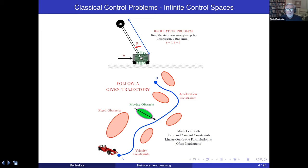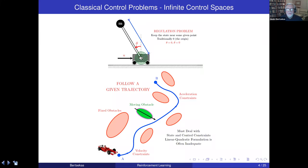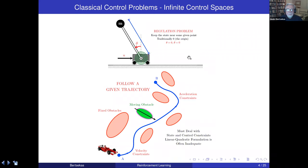A classic example is the inverted pendulum problem, a good test bed for algorithms. The goal is to keep a pole with a mass at its end upright, which corresponds to angular position zero and angular velocity zero. We achieve this by applying a horizontal control force on a cart, moving it so the mass reaches and stays in the upright position. This is a regulation problem.